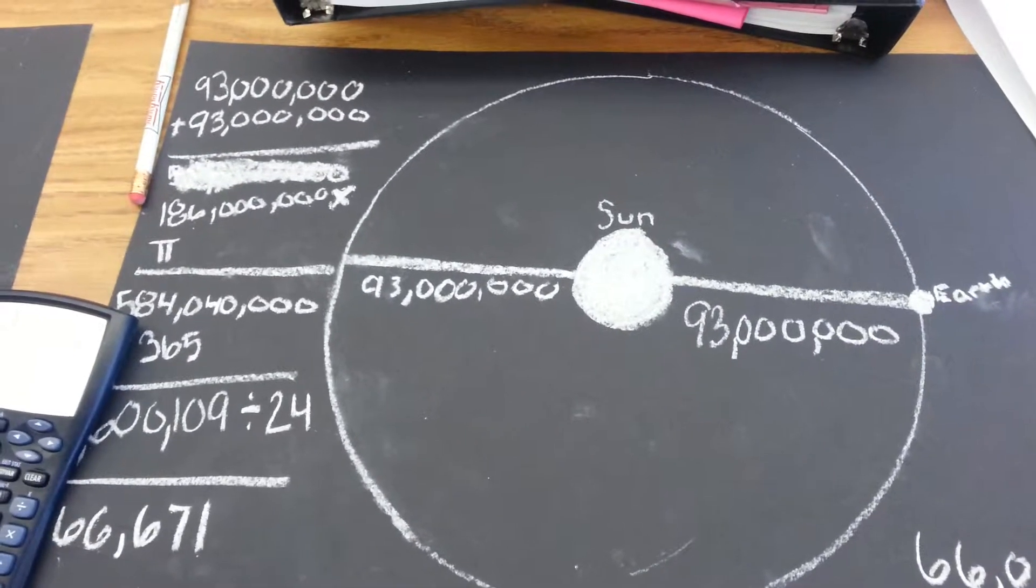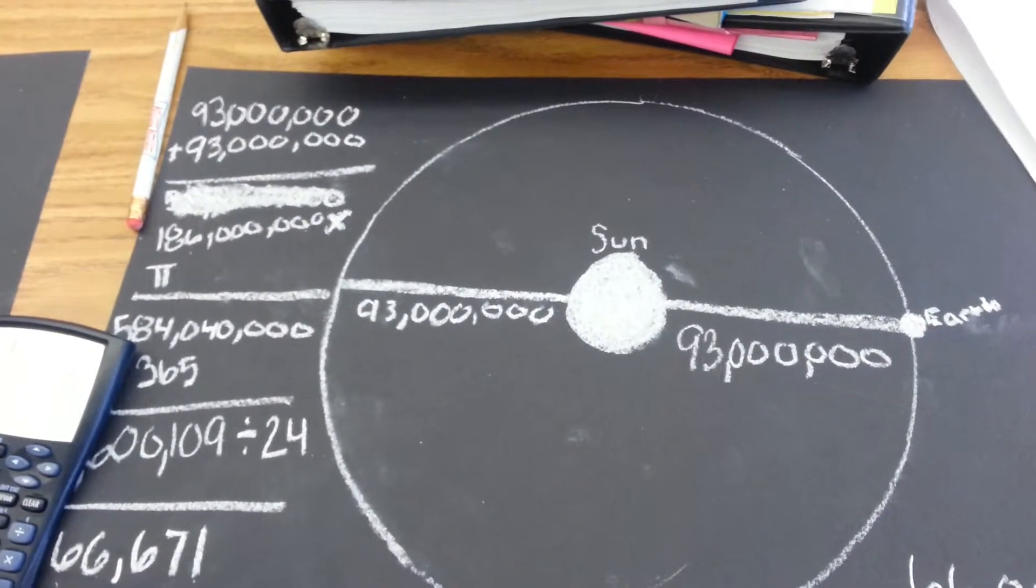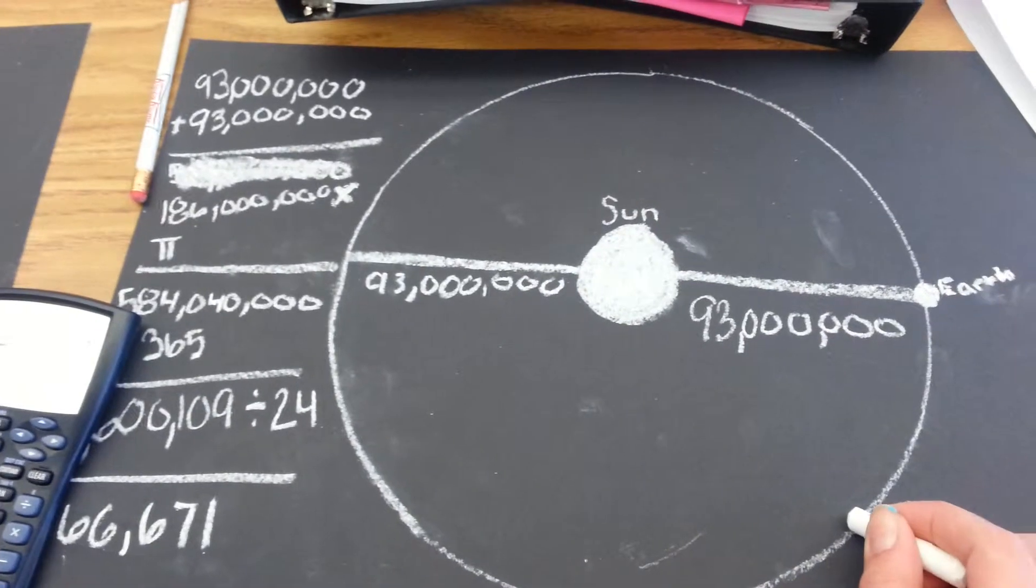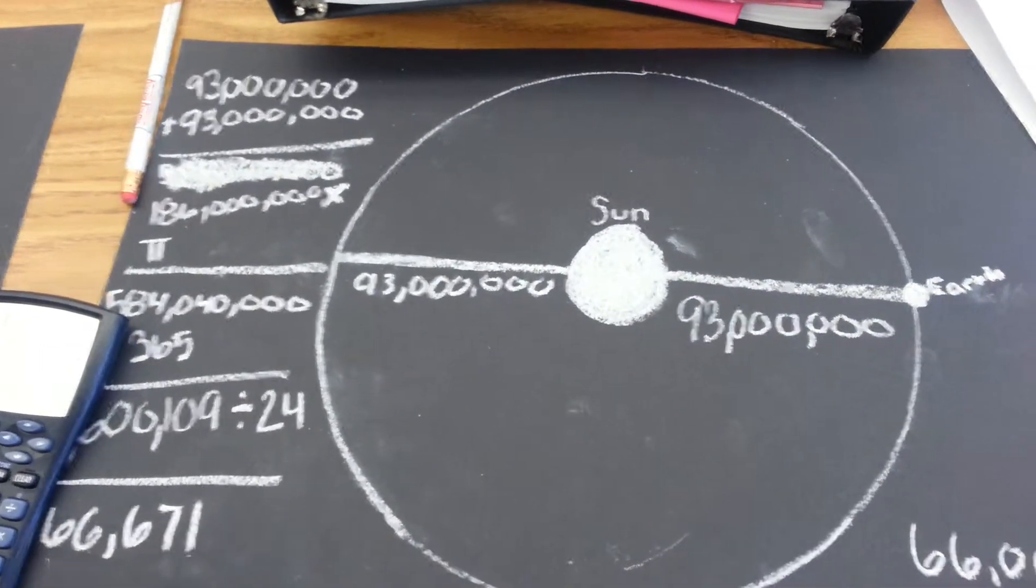And the Sun's, the Earth actually speeds up and slows down a little bit. But that is really close to being the accurate speed. Good job.